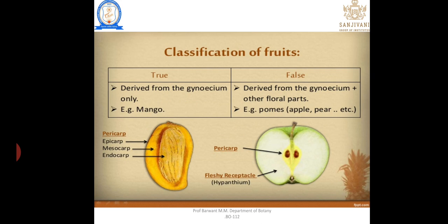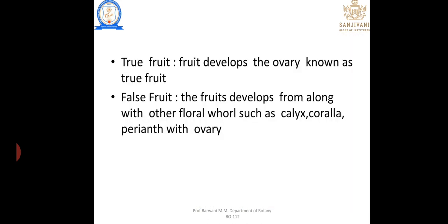The fruit derived from the gynoecium only is known as a true fruit. The fruit developed from other floral parts such as sepals, petals, or other parts is known as a false fruit. For example, apple is a false fruit and mango is a true fruit.